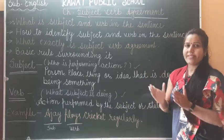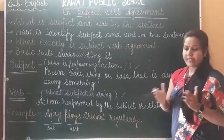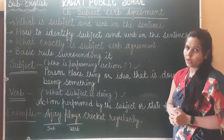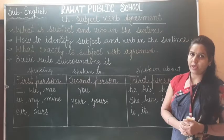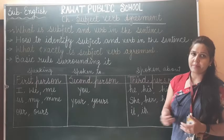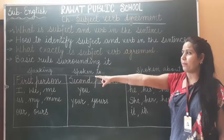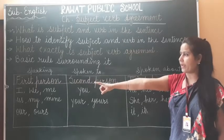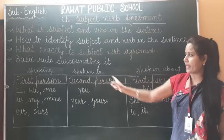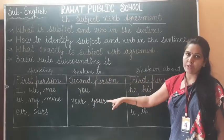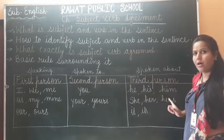Now it is clear what is subject and what is verb, and how to identify them in a sentence. Next, we will understand first person, second person, and third person. In first person we write: I, we, me, us, my, mine, our, ours. In second person: you, your, yours. In third person: he, his, him, she, her, hers, it.